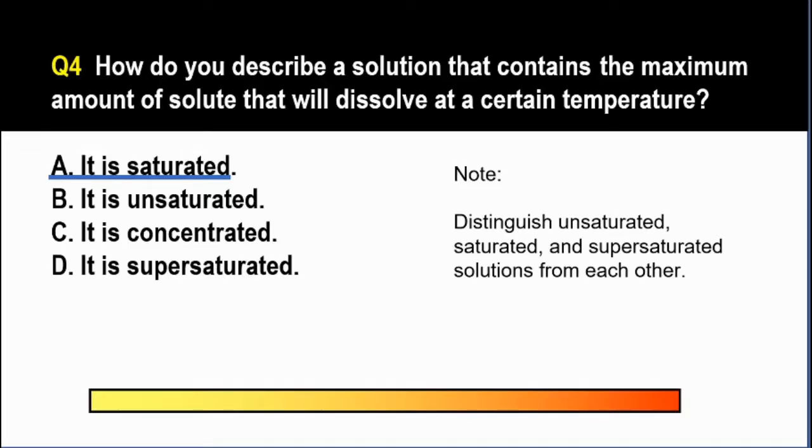So yung mangyayari, the undissolved sugar will just go to the bottom of your container. Meanwhile, when you say unsaturated solution, this solution contains less than the maximum amount of solute that can be dissolved. And a supersaturated solution, it contains more than the maximum that can be dissolved at a certain temperature.